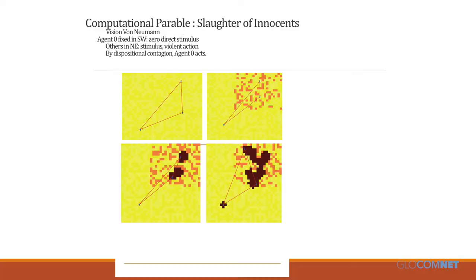Here's the basic idea with one example. There are three Agent Zero agents — the blue agents — connected by weights we'll make endogenous. The southwestern agent experiences no attacks from the indigenous yellow population; the northeast agents do. That pushes them over their threshold and they retaliate, wiping out villages. And even though the southwestern agent is never directly attacked — zero probability his neighborhood is an enemy — through emotional dispositional contagion, he nonetheless wipes out his village.